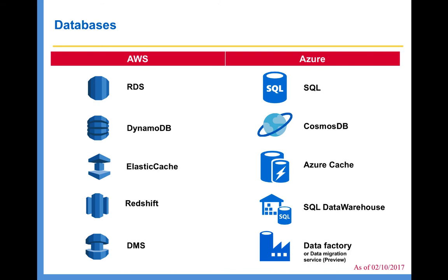Thirdly, using AWS ElastiCache and Azure Cache, you will be able to set up, manage, and scale a distributed in-memory cache environment in the cloud. And if you want to deploy a Data Warehouse on the cloud, then you can use AWS Redshift, and when it comes to Azure, you can use SQL Data Warehouse.